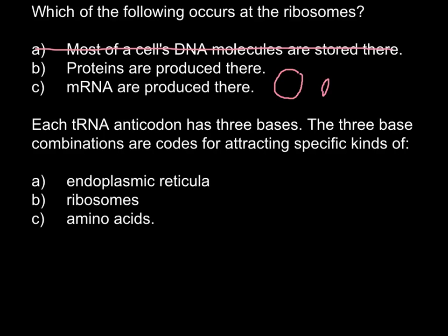Answer A is not correct, and we are left with B and C. Answer C: messenger RNA are produced there — this is not correct because ribosomes use messenger RNA in order to translate it into the protein sequence. So we can cross out answer C, and the correct answer would be B: proteins are produced there.